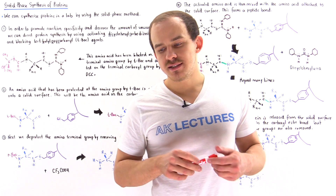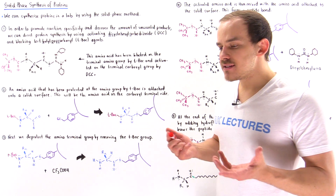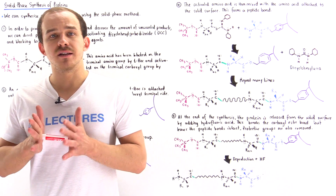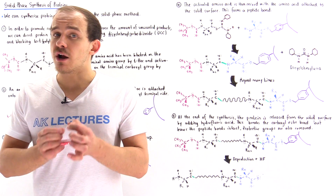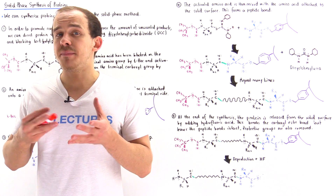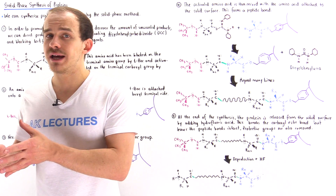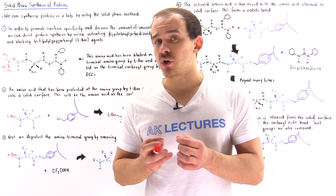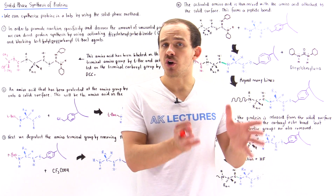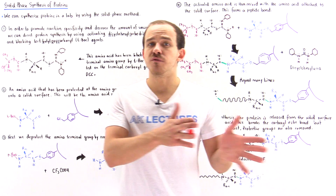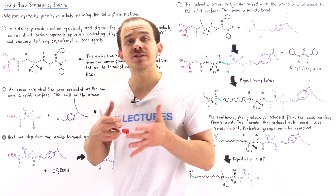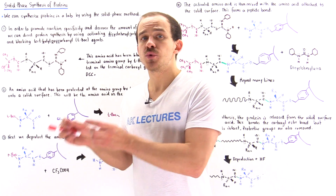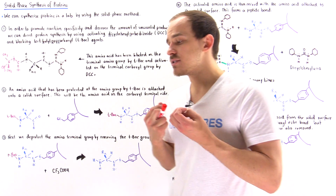As we'll see in much more detail, the way that our body synthesizes proteins is quite different than the way that we synthesize proteins in the lab. In our body, ribosomes build proteins by beginning at the terminal amino end and ending at the terminal carboxyl end. But in the laboratory, we begin building proteins at the terminal carboxyl end and move backwards towards the terminal amino end — the opposite direction to how proteins are built inside our cells.